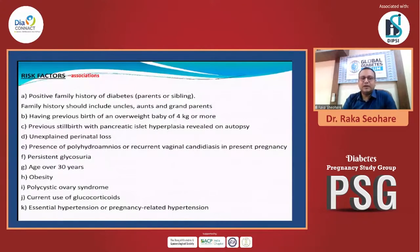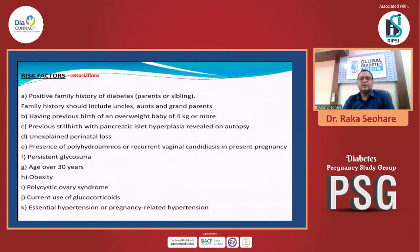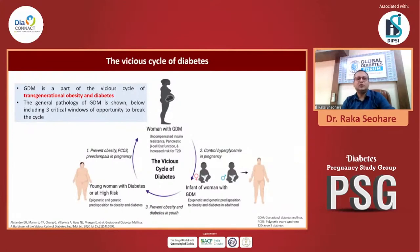Further risk factors include: positive family history of diabetes in parents, previous birth of an overweight baby of 4 kg or more, previous stillbirth with pancreatic islet hyperplasia, unexplained perinatal loss, polyhydramnios, persistent glycosuria, obesity, PCOS, and current use of steroids. After COVID, steroids have been inadvertently used throughout the globe, which may be one of the causes for increased GDM in women. Essential hypertension or pregnancy-related hypertension also contributes, and this vicious cycle of diabetes continues.